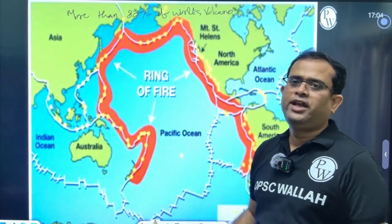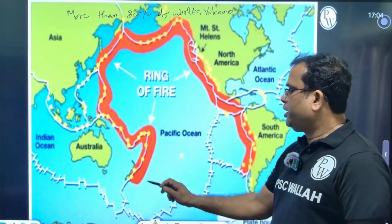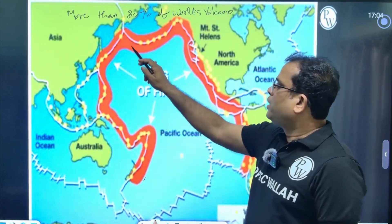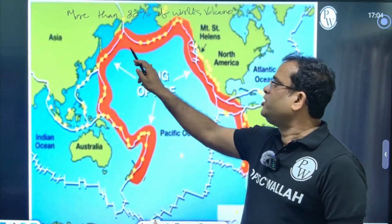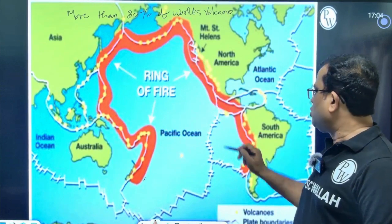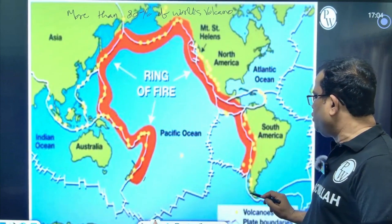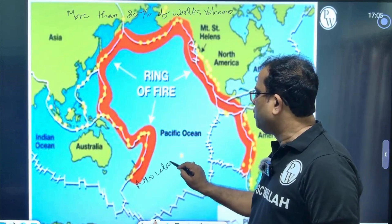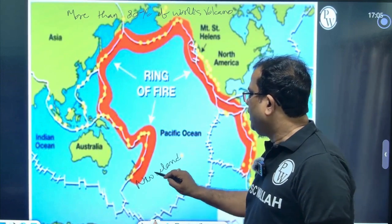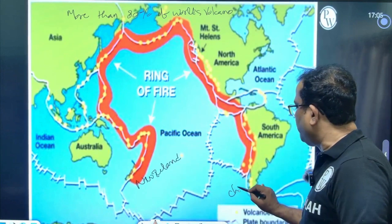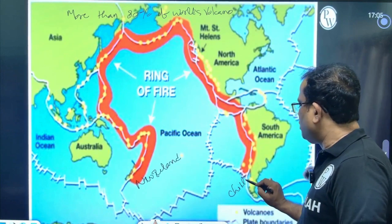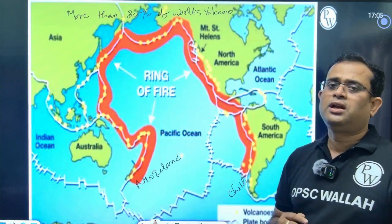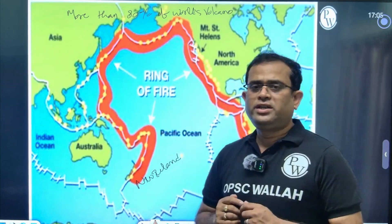This is the Ring of Fire. As you can see, it extends from New Zealand through Indonesia, Japan, China, North America, South America, until Chile. It covers approximately 40,000 km — such a long distance.